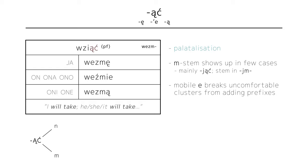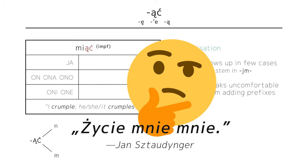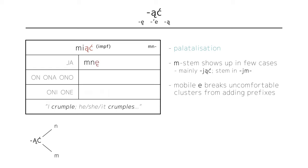In most other cases though, it's n. Take miąć, to crumple or bend, a meme as of recent Polish exams, which conjugates mnę, I crumple, mnie, he, she, it crumples, and mną, they crumple.